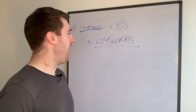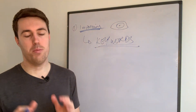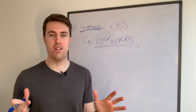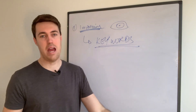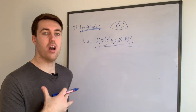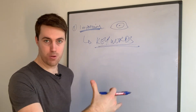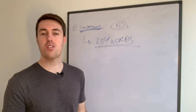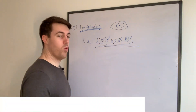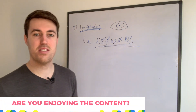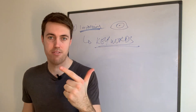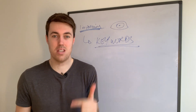How do we optimize for impressions? That is all about keywords. Search terms are what the customer actually types into the Amazon search bar, whereas keywords are what we tell Amazon we want to be shown for. Keywords are what we control; search terms are what the customer controls. When optimizing, we need to find keywords that fit two boxes: they are relevant to our product, and they have traffic running through them.